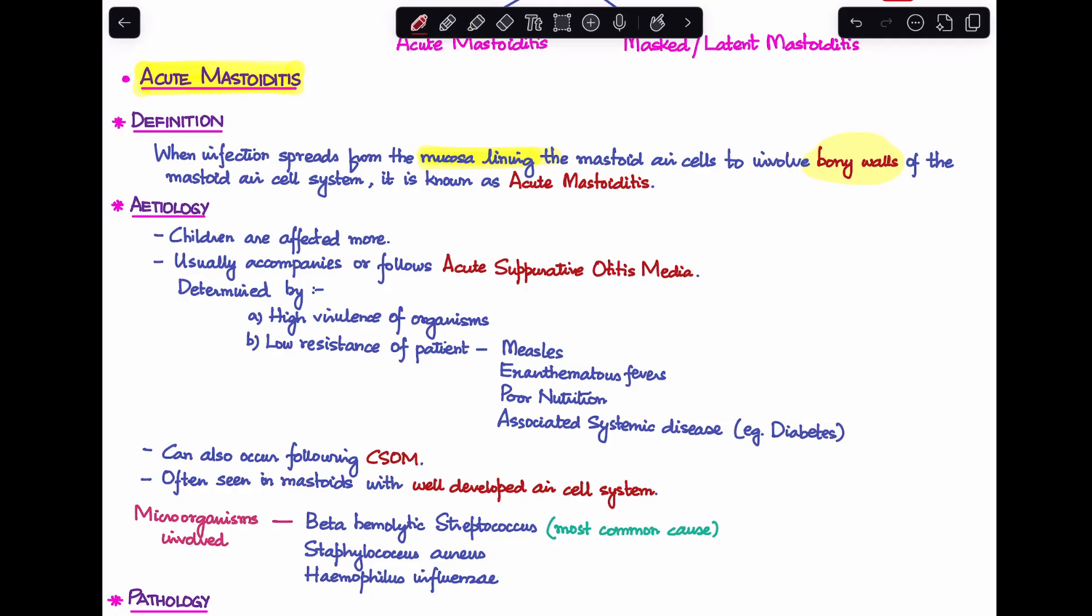Coming to etiology, acute mastoiditis is more commonly seen in children. Usually it happens as a result of, or it follows, an infection which is acute suppurative otitis media, but it can also occur following chronic otitis media. Whether mastoiditis develops after acute suppurative otitis media depends on two factors: the virulence of the organisms and the resistance of the patient. If the patient is suffering from measles, exanthematous fever, poor nutrition, or associated systemic disease like diabetes, resistance is lowered.